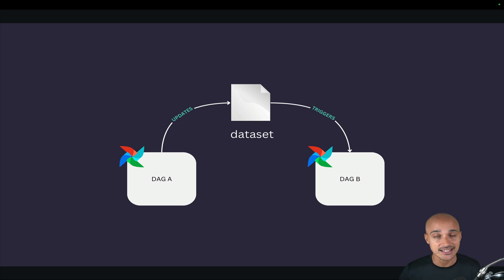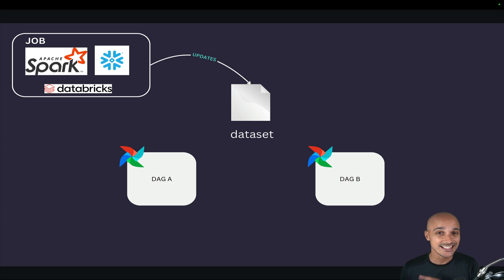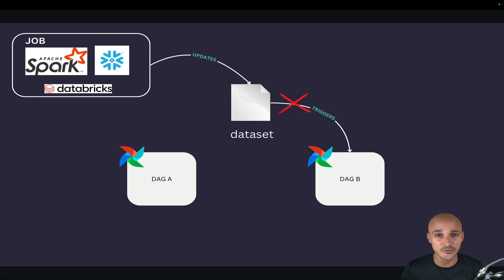You can basically trigger DAGs based on data updates instead of time. However, this is limited to the scope of Airflow. Imagine you have the same dataset — a file — but a Spark or Databricks job updates it. In that case, Airflow won't be aware of it and won't trigger DAG B, because Airflow doesn't look into the content of the datasets. That might change in the future, but as of today it's not the case.